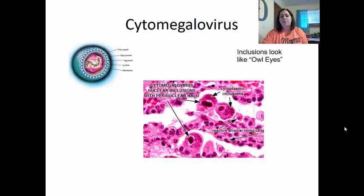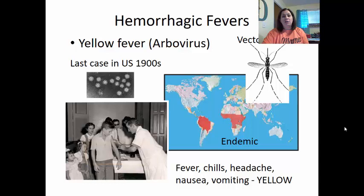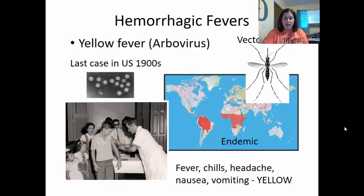CMV is an enveloped virus. Nuclear inclusions create a type of halo giving cells an owl-eye appearance under the microscope. Hemorrhagic fevers include yellow fever, which is an arbovirus with the mosquito as vector. The last case in the US was in 1905, largely due to a vaccine that provides good immunity. Yellow fever is endemic to parts of Africa and Central and South America. It causes fever, chills, headache, nausea, and vomiting. The yellow color comes from liver damage causing yellowing of the skin, due to bile being deposited into the skin and mucous membranes.